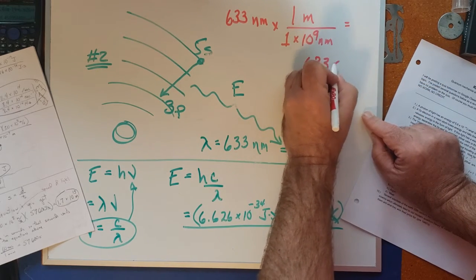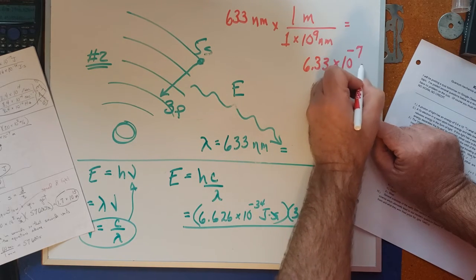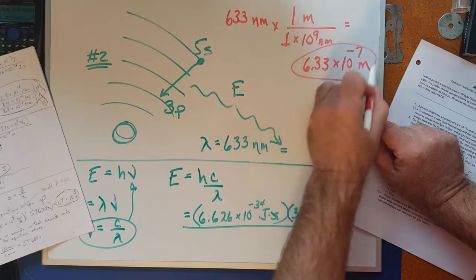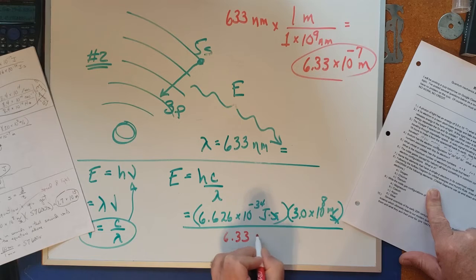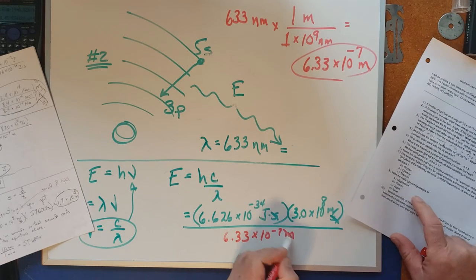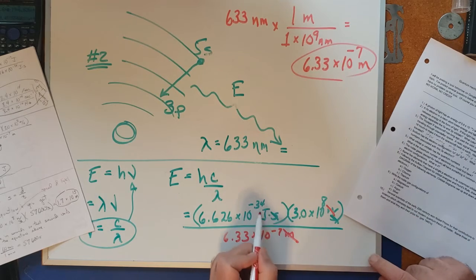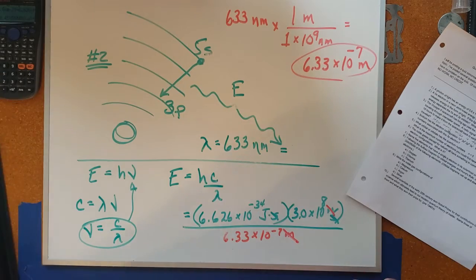That's what you have to put down here, 6.33 times 10 to the minus seven meters. Now meters cancel with meters, and all you're left with is joules, which is exactly what we want.